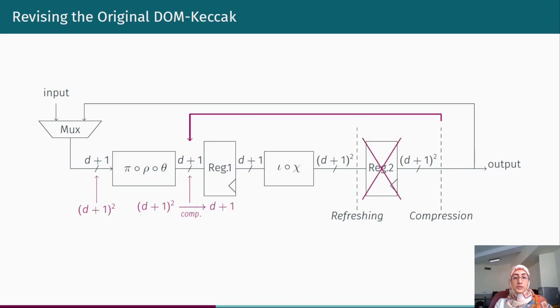Which results in d plus 1 to the power of 2 instances of theta rather than d plus 1 instances. Of course, we will take this note into account when evaluating our design, but more importantly, we are interested in investigating what happens in the lack of register layer after the linear layer Chi and before linear layer theta as its subsequent operation.